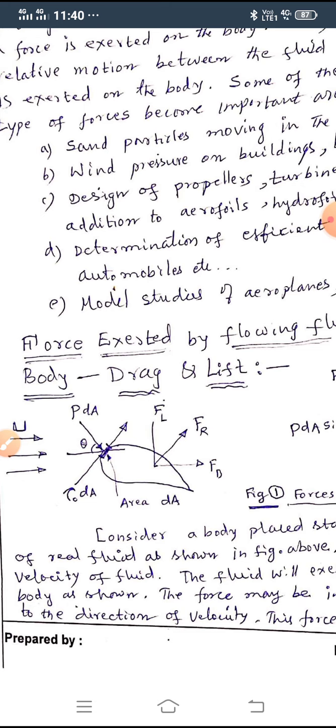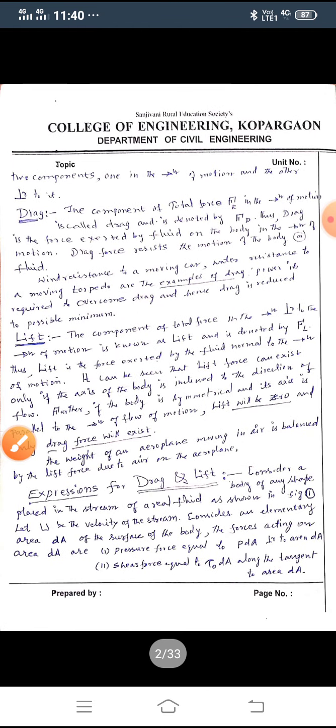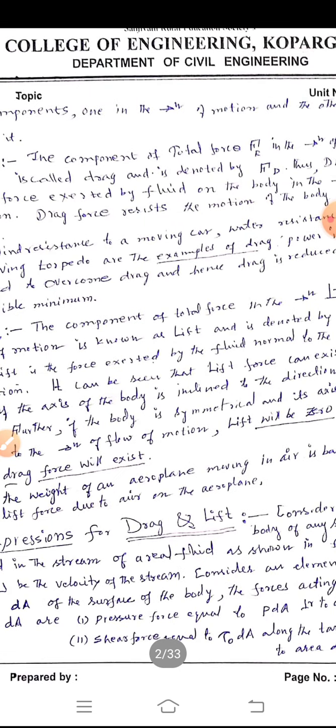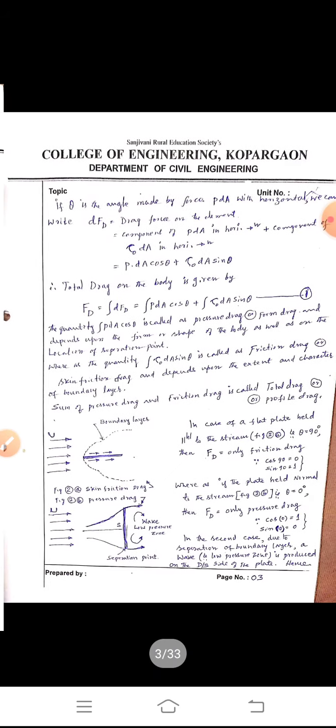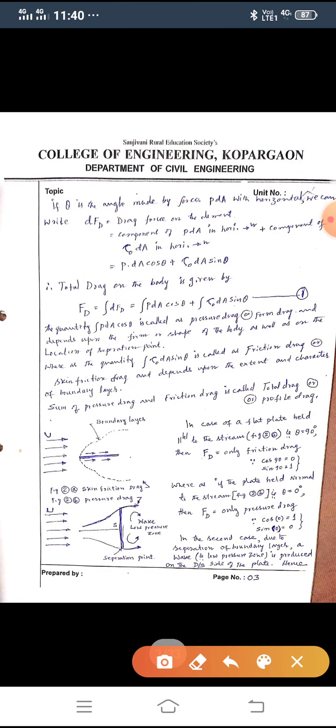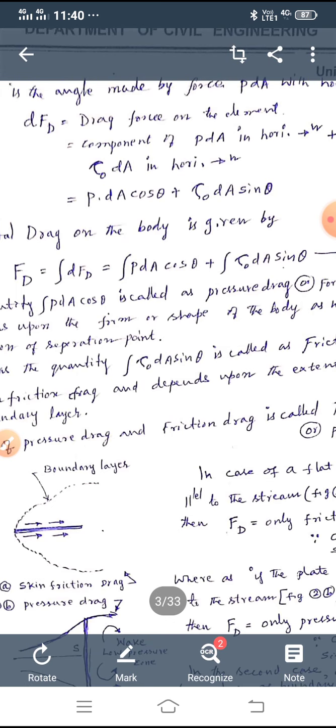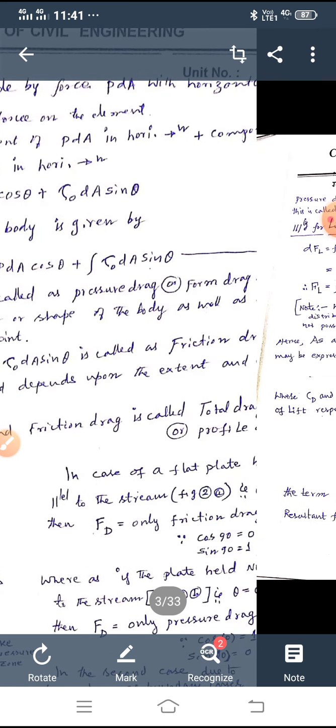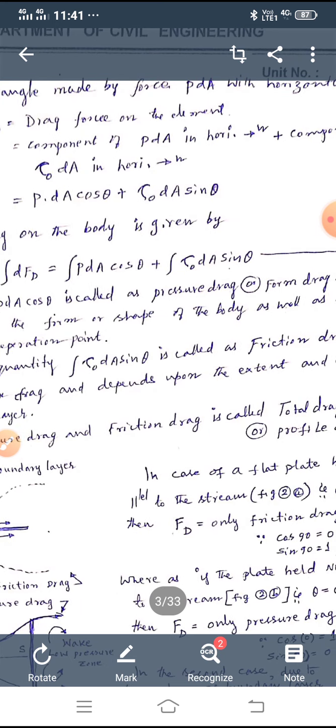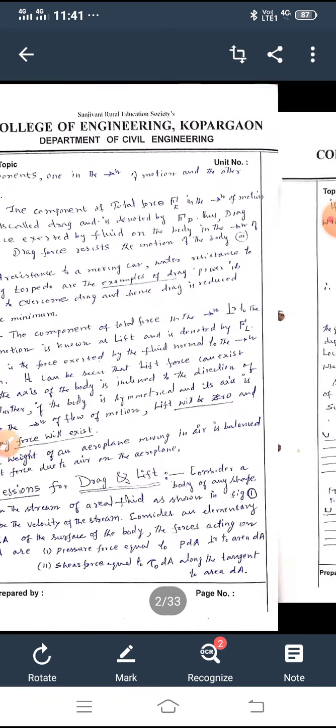Now, let us consider a small elementary area DA, which is making an angle theta with the horizontal, as shown in figure. Then, the force D of D is drag force on the element, that is equal to component of PDA in horizontal direction, plus component of τ₀DA in horizontal direction.